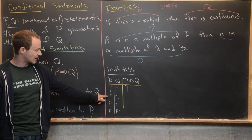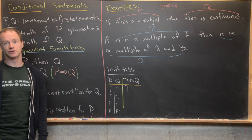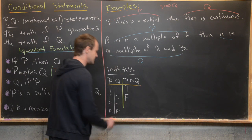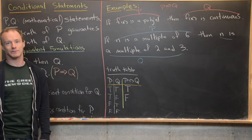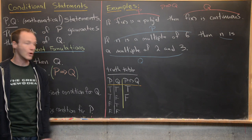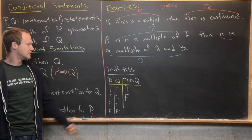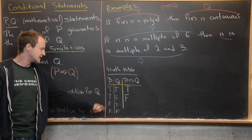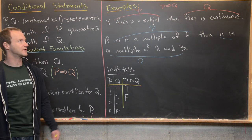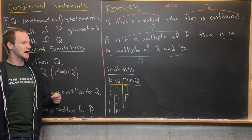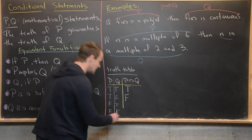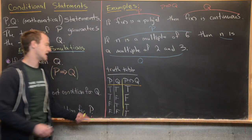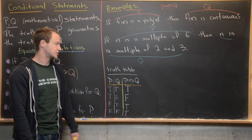If P is true and Q is false, that makes P implies Q a false statement — P did not imply Q. But when P is false, the last two rows are both vacuously true, because our statement P implies Q didn't even get a chance to start — P was false to begin with. Our statement P implies Q assumes P is true, so these two are vacuously true. The truth table reads: true, false, true, true.